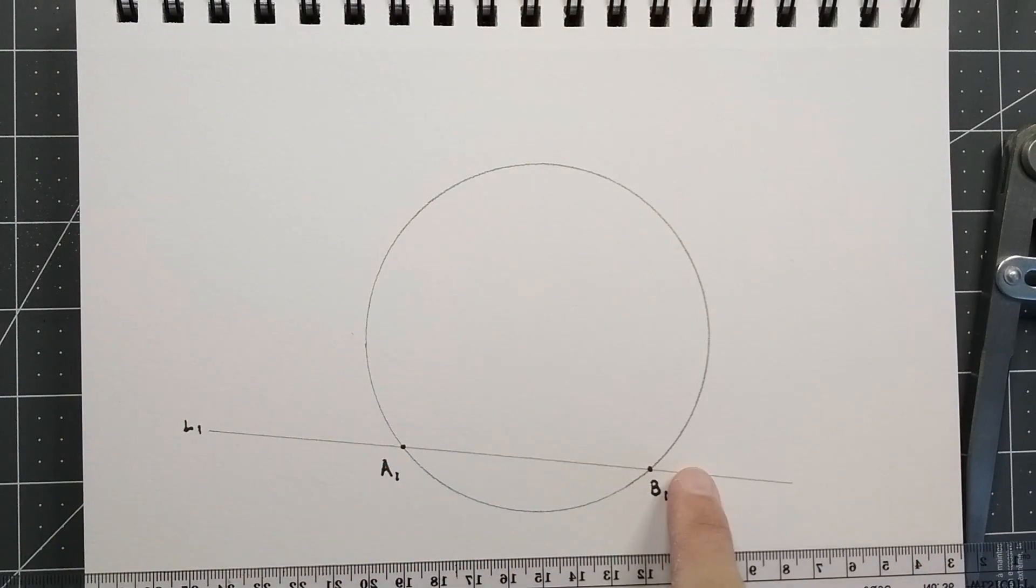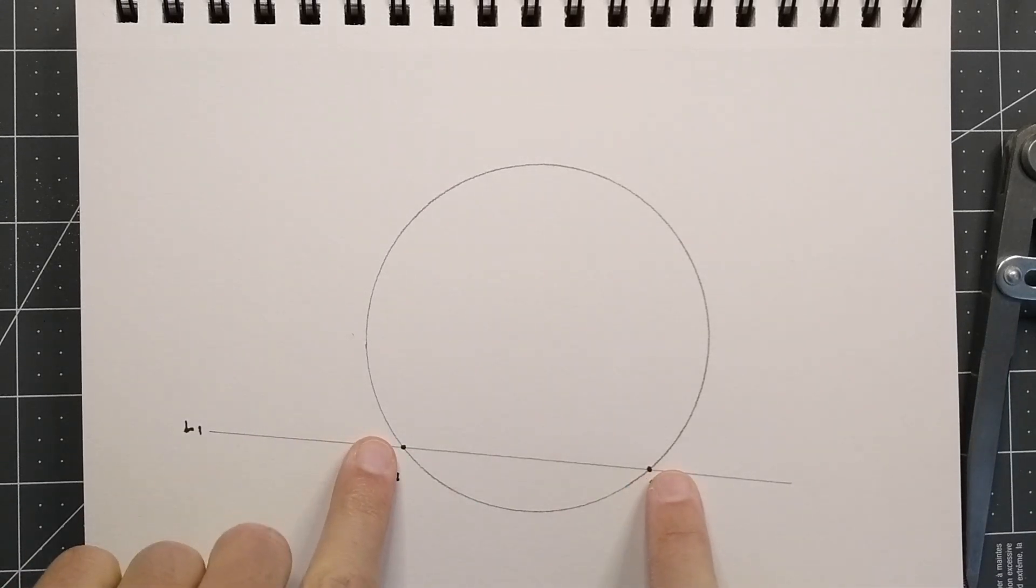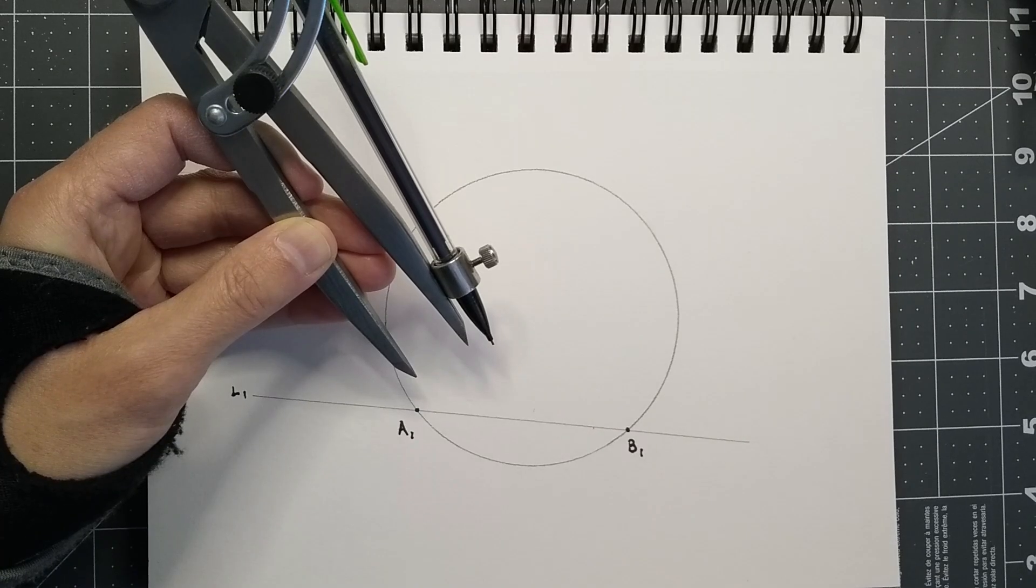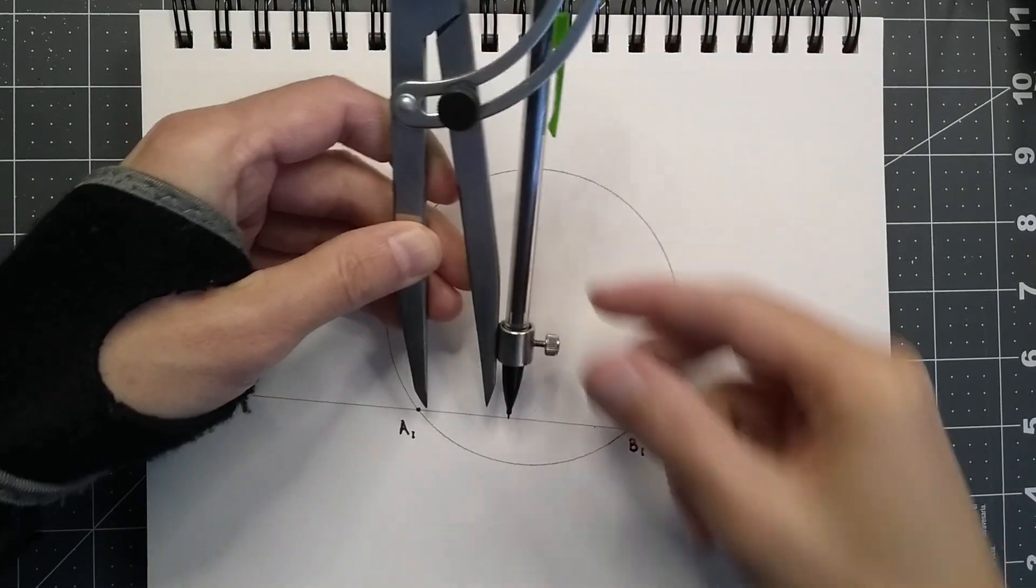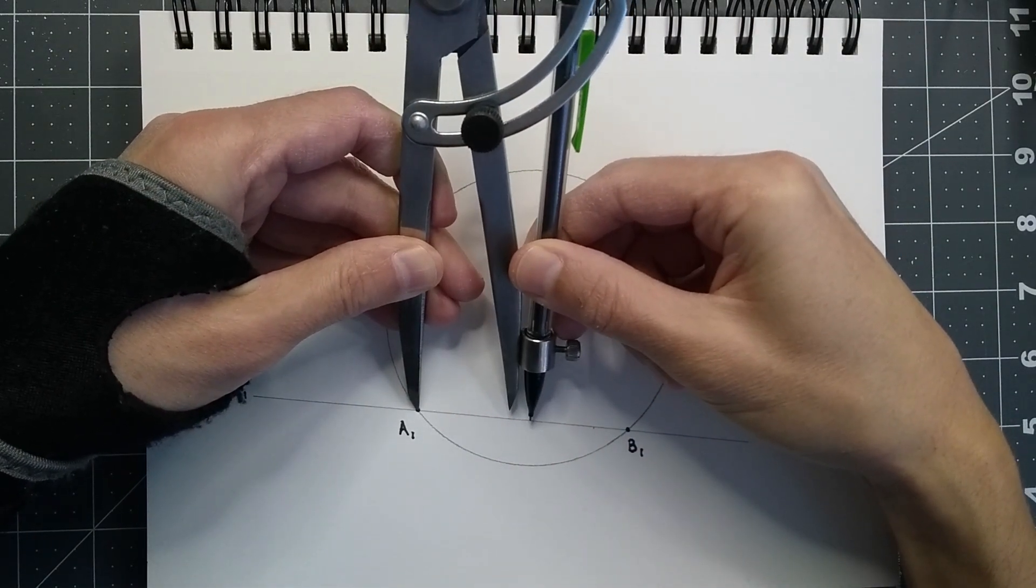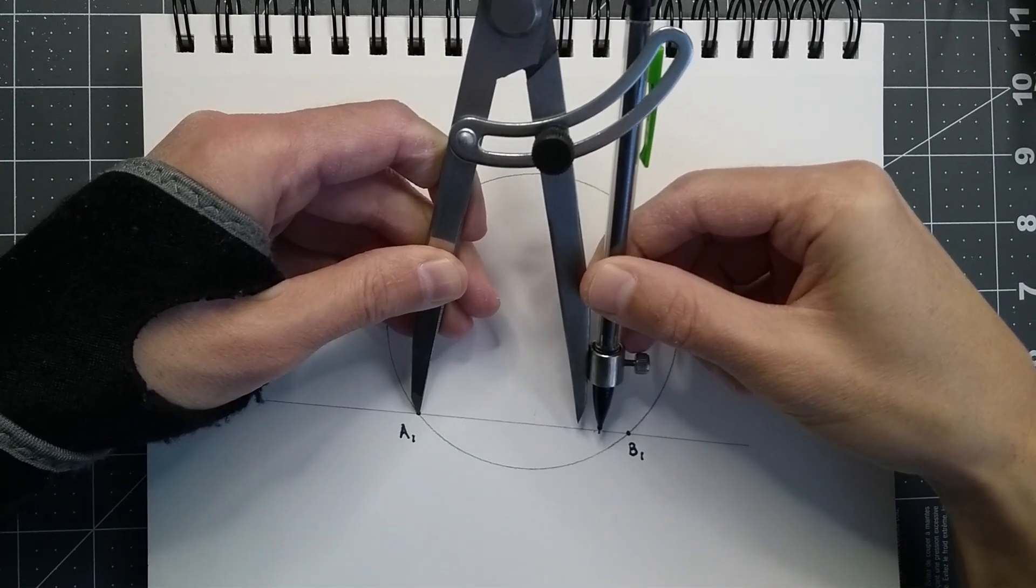The first thing we'll do is we'll find the center of the line. To do that, we will take the compass and we'll set it to a width that is wider than the halfway point on this line. The middle is probably going to be around here somewhere, so let's set the width to over this direction. Crank it down.